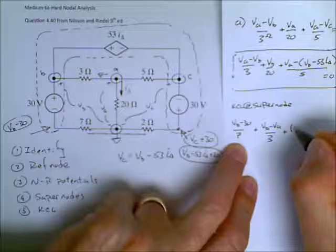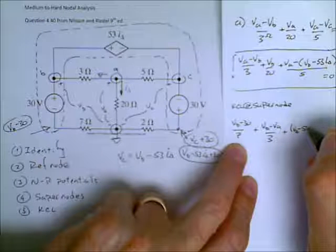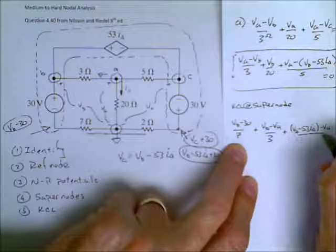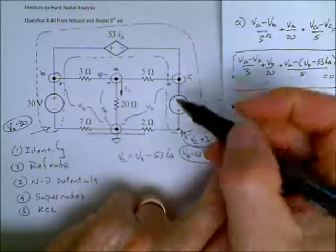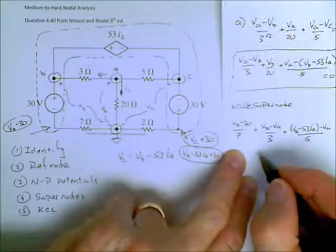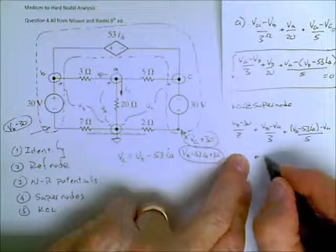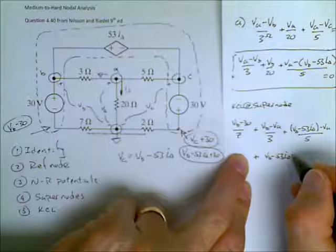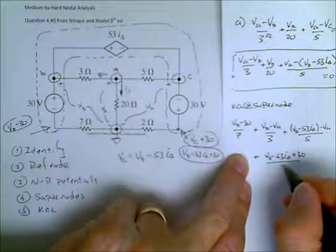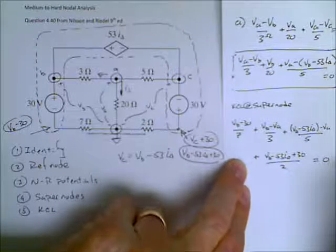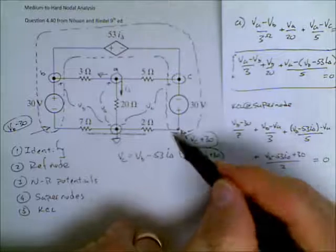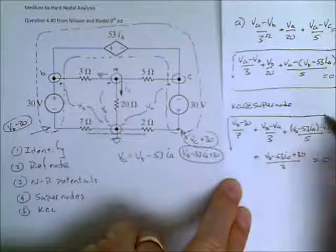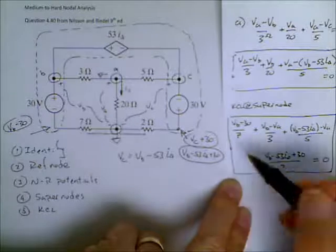Plus VB minus 53 I delta, plus 30, all divided by 2. That's all equal to 0. And so this last term is the current here. So we have a second equation in 3 unknowns.